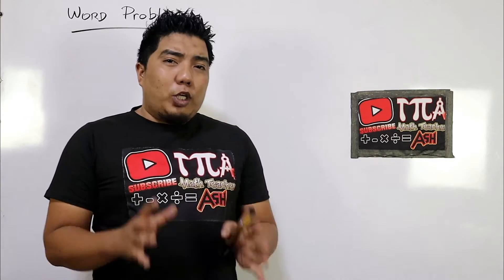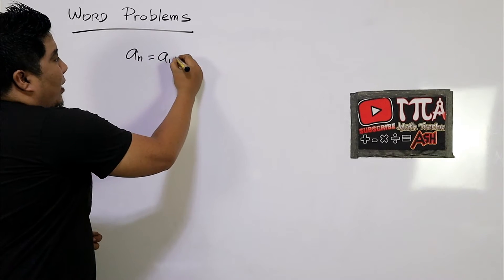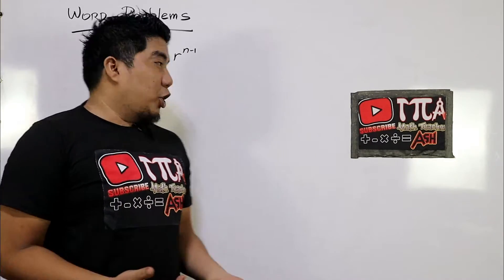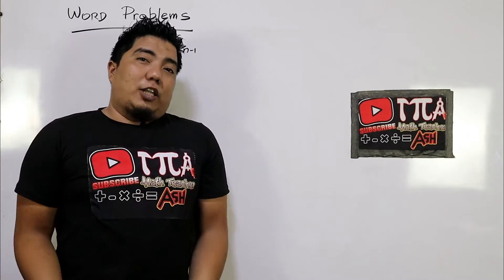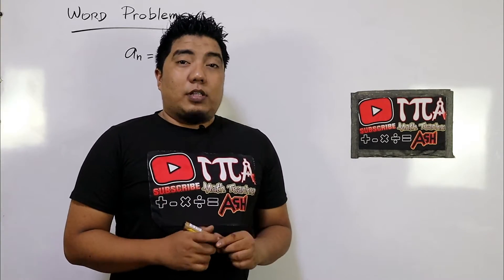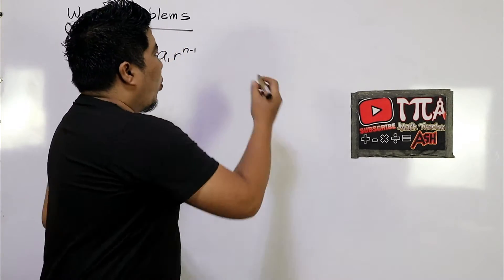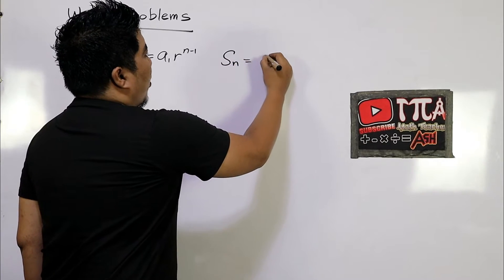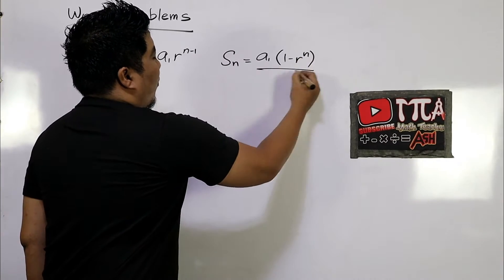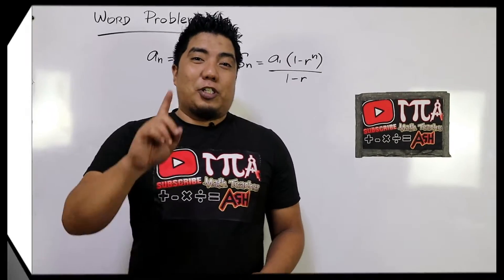The formula we use in the geometric sequence is A sub n is equal to A sub 1 times r to the power of n minus 1, where r is the common ratio and A sub 1 is the first term. While if we are talking about the sum of a geometric sequence, that is called geometric series. In the geometric series, we use the formula S sub n is equal to A sub 1 times 1 minus r to the power of n, over 1 minus r. Now, let us start our first problem.